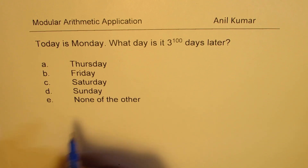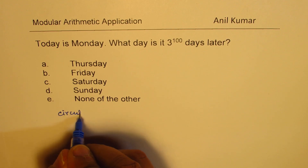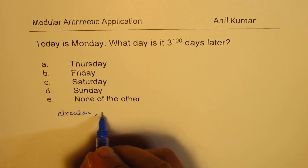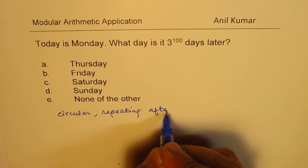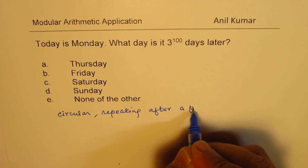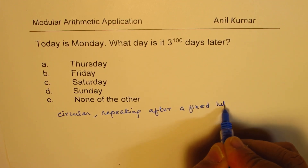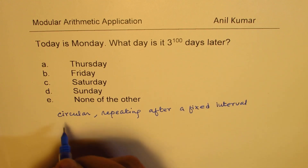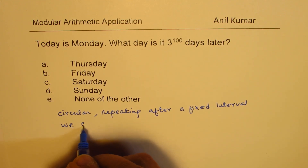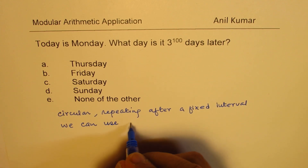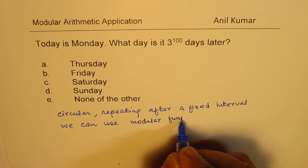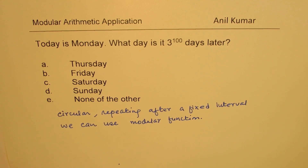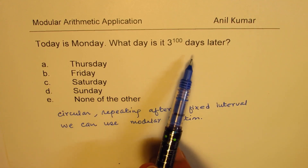Whenever we have something which is circular in nature, repeating after a fixed interval, we can use mod — it is also called modular function. In this context we know there are seven days in a week.